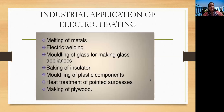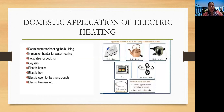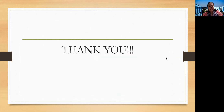Industrial applications of electric heating include melting of metals, electric welding, molding of glass for making glass appliances, baking of insulators, molding of plastic components, heat treatment of pointed surfaces, and making of plywood. Domestic applications include room heaters, immersion heaters, hot plates, geysers, electric cables, electric irons, ovens, toasters, and more.